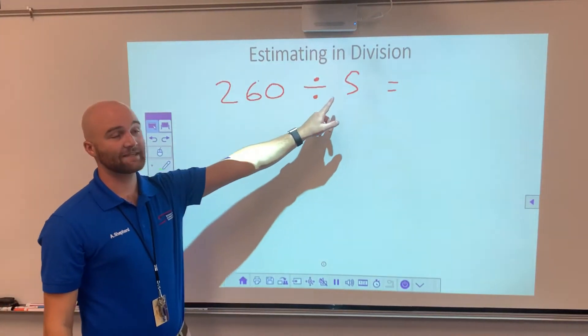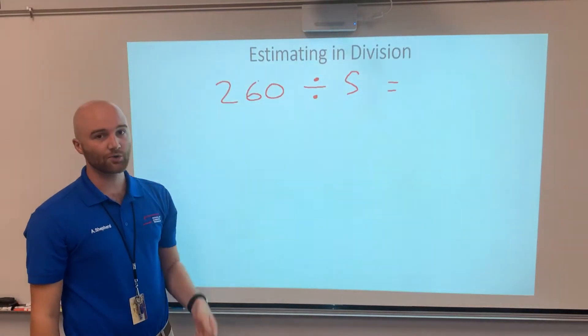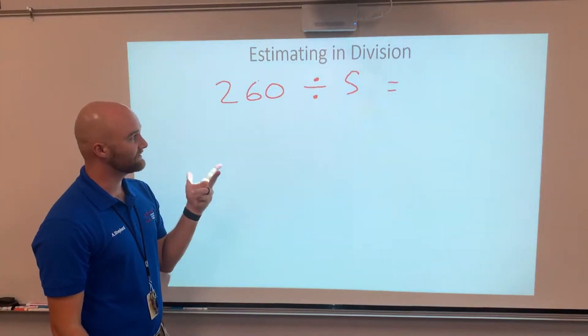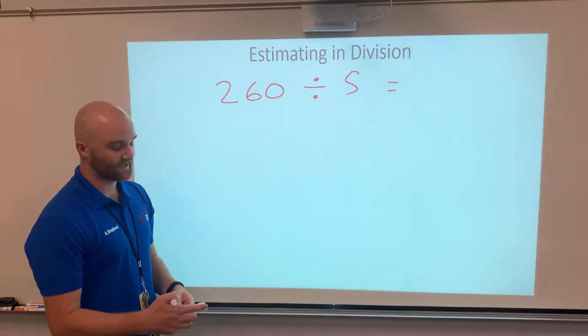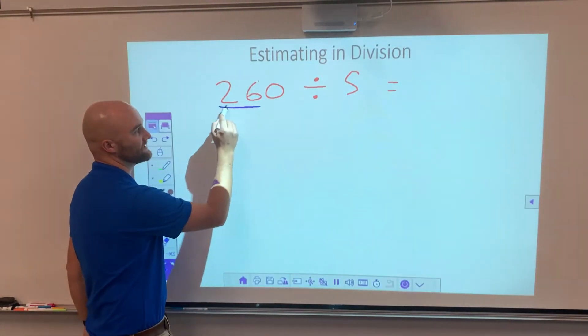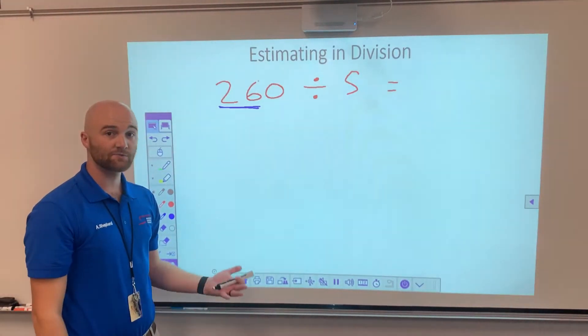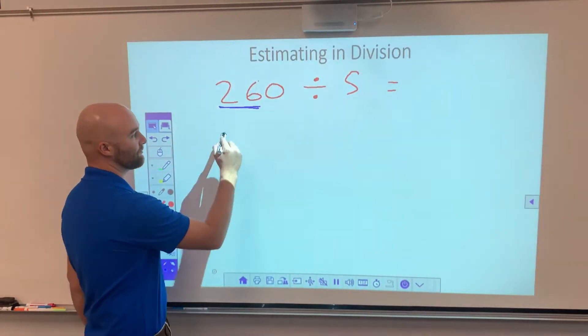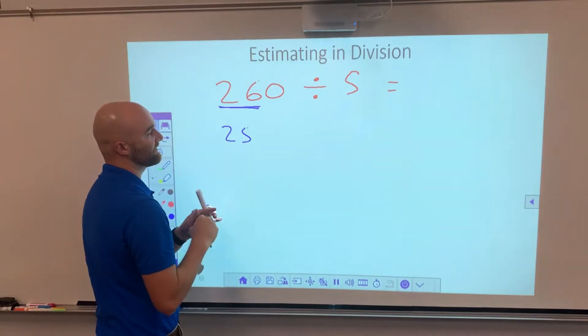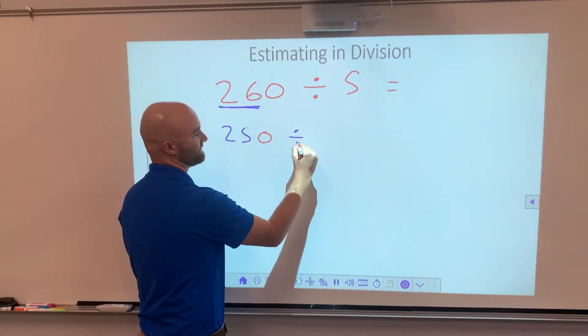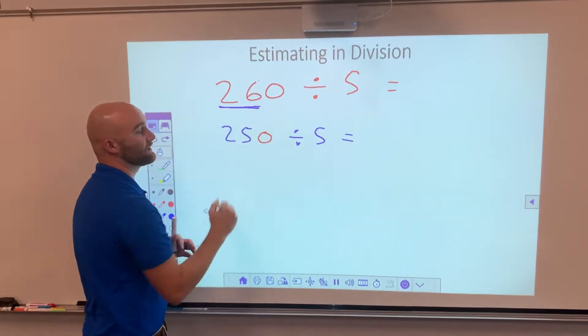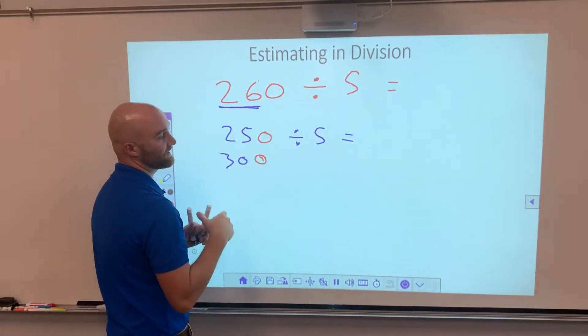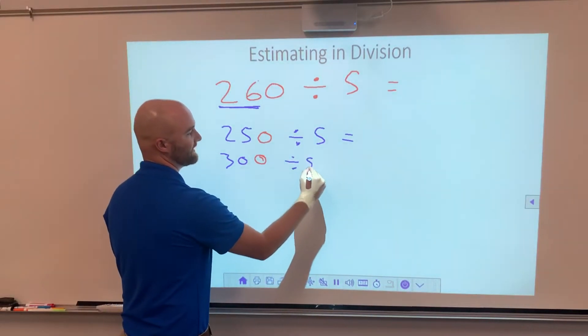So I'm going to look at this 5 and think about if I count by 5s, do I see any numbers up here that are close to what I'll get? If I count by 5s: 5, 10, 15, 20, 25, 30. Wait a second. At the front here, I see 26. 26 is between 25 and 30. So I know that this answer is going to be somewhere between 250 divided by 5 and 300 divided by 5, somewhere in the middle.